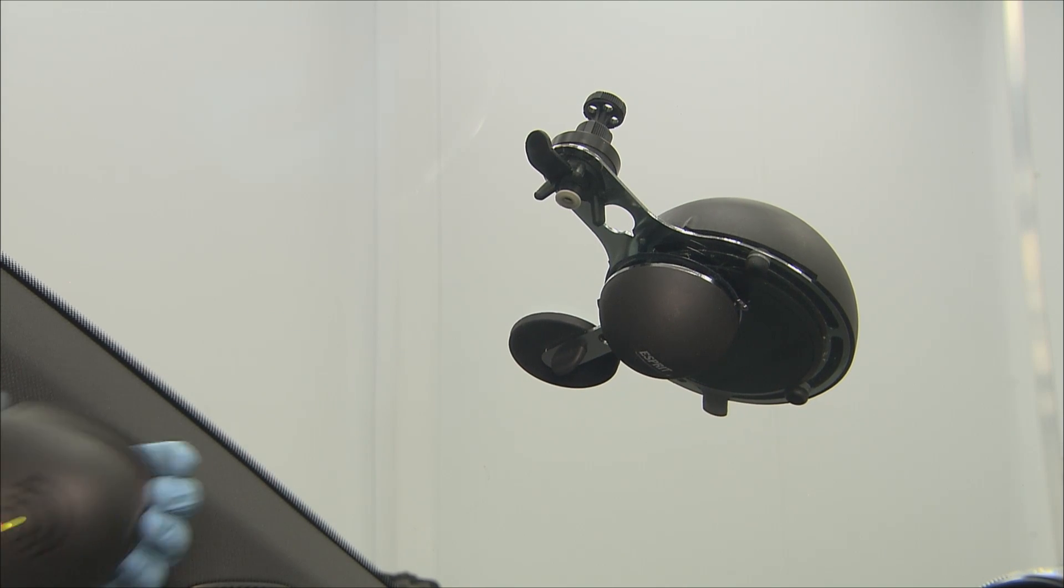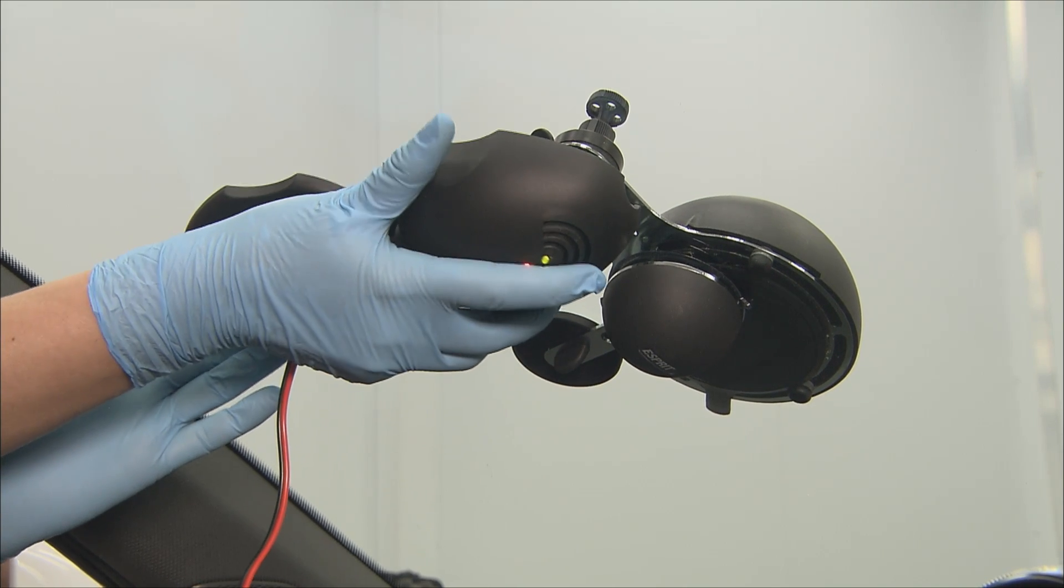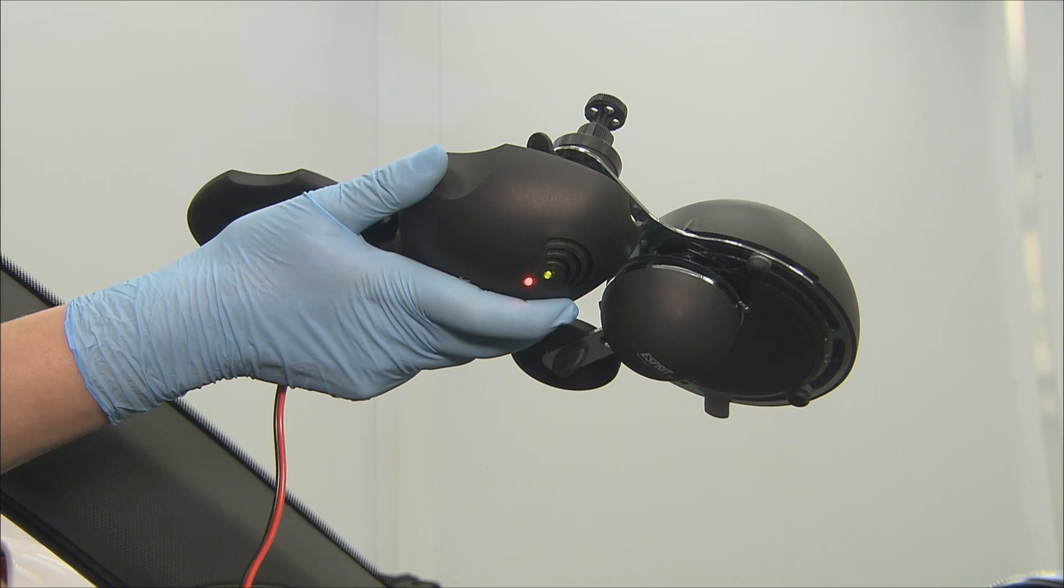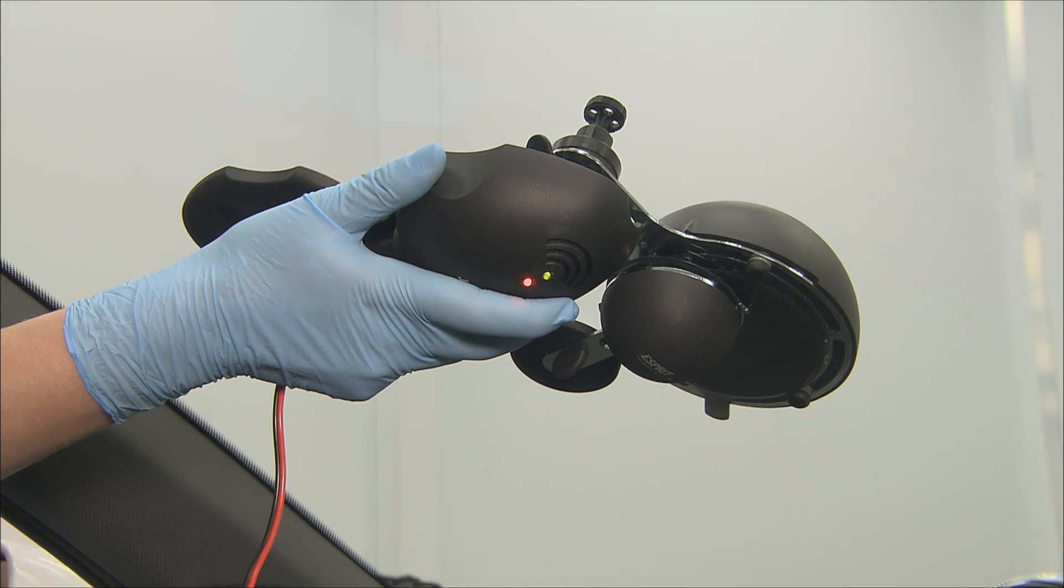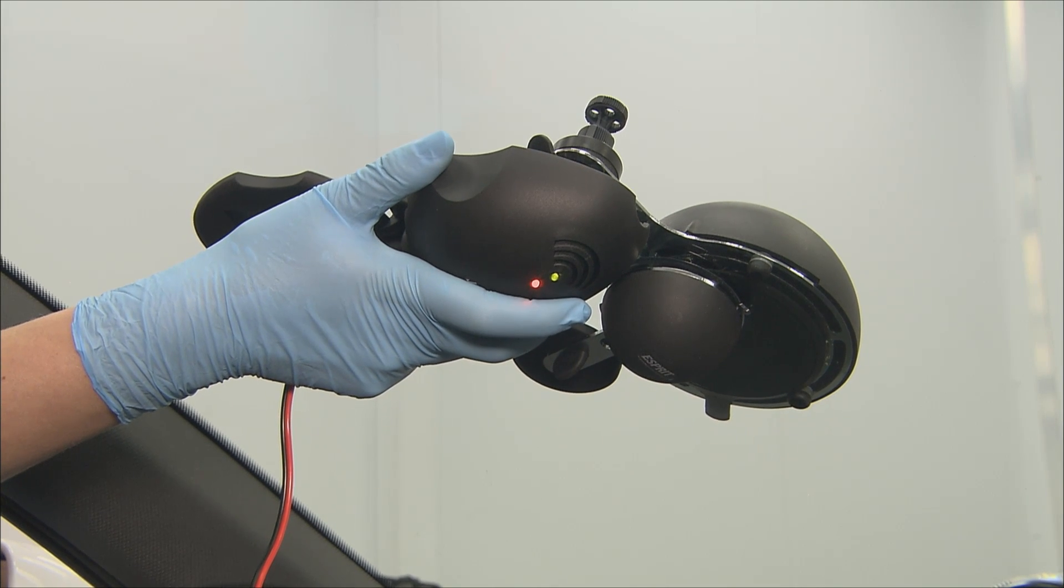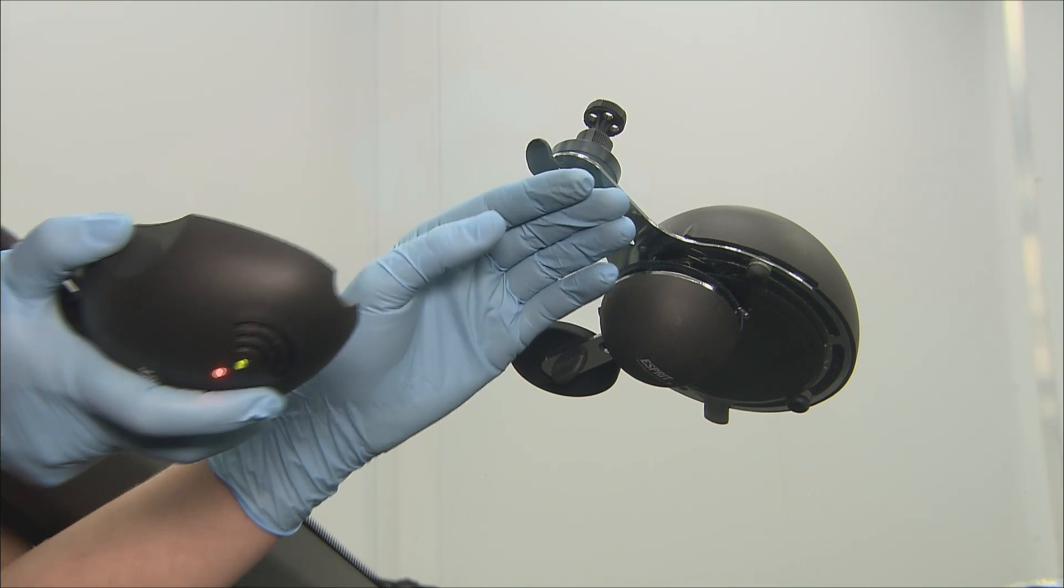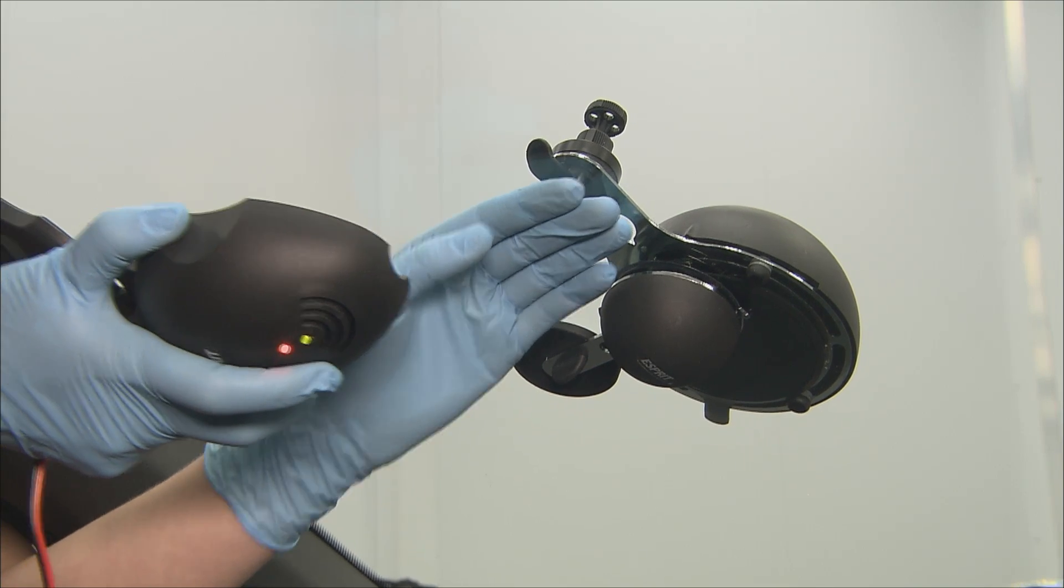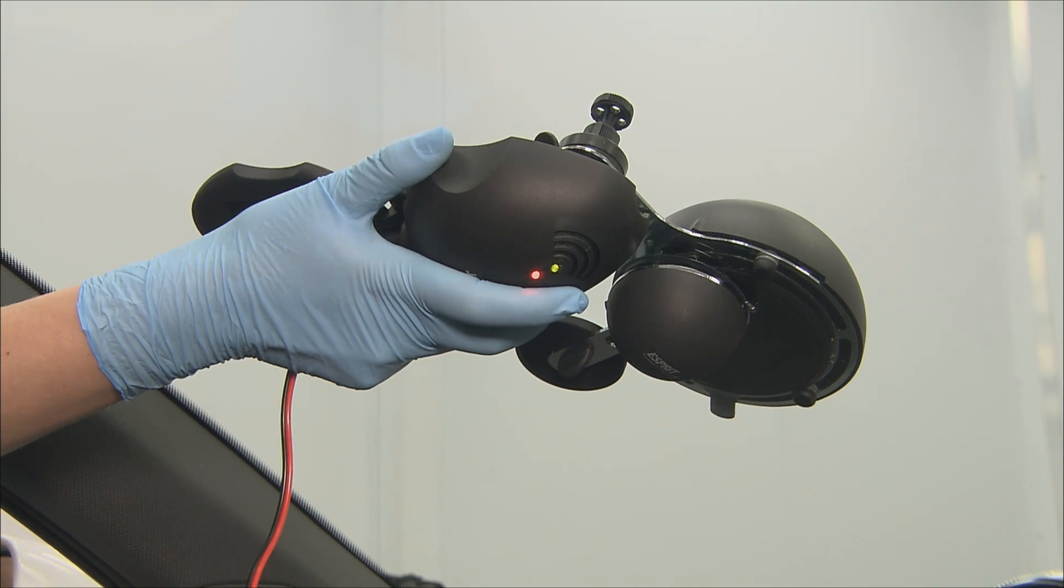The mirror is moved to one side and the inside of the windscreen is warmed with the Esprit heater. This operation must be performed with great care, as overheating will cause the cracks in the star brake to close up and prevent the resin from penetrating.